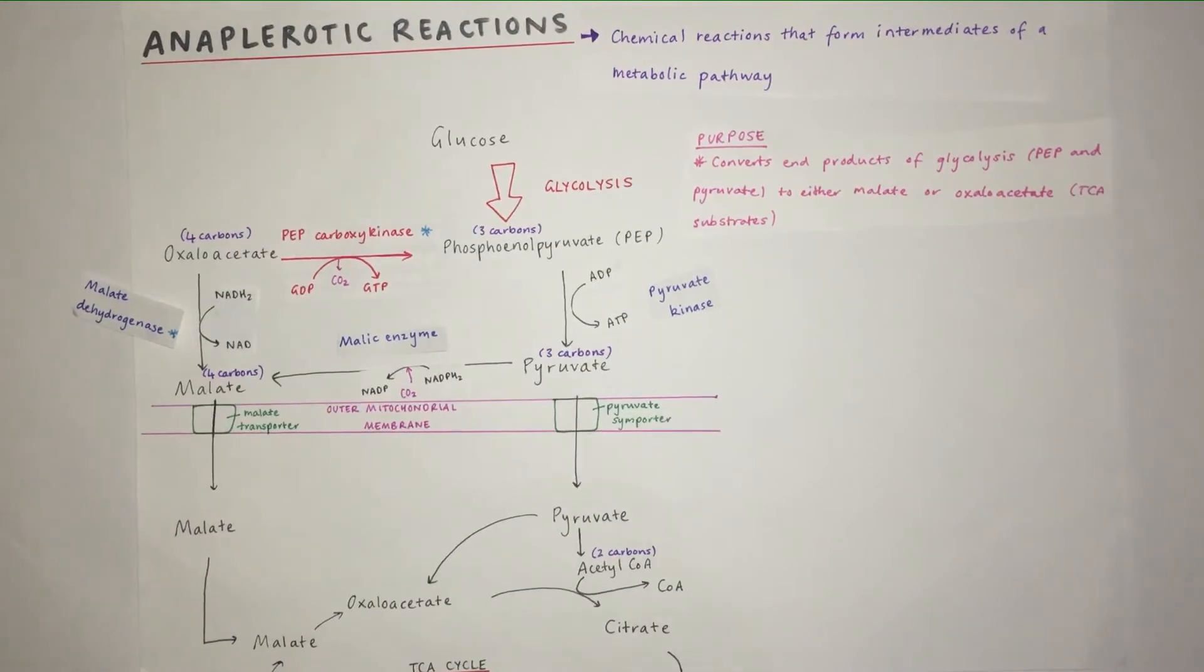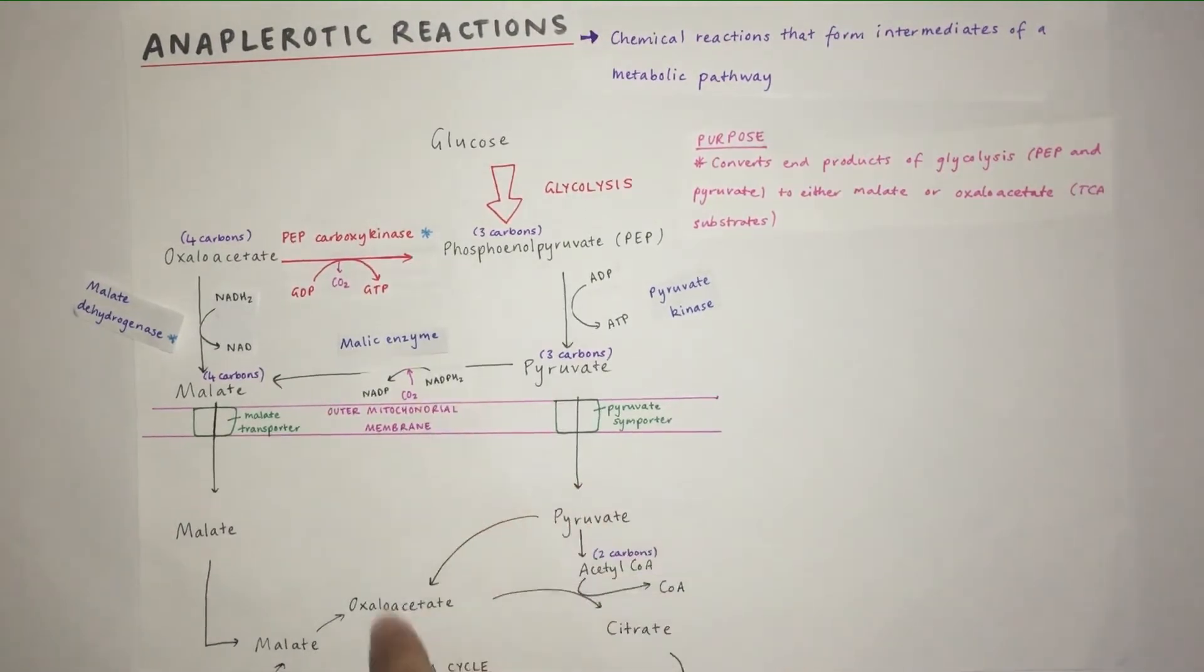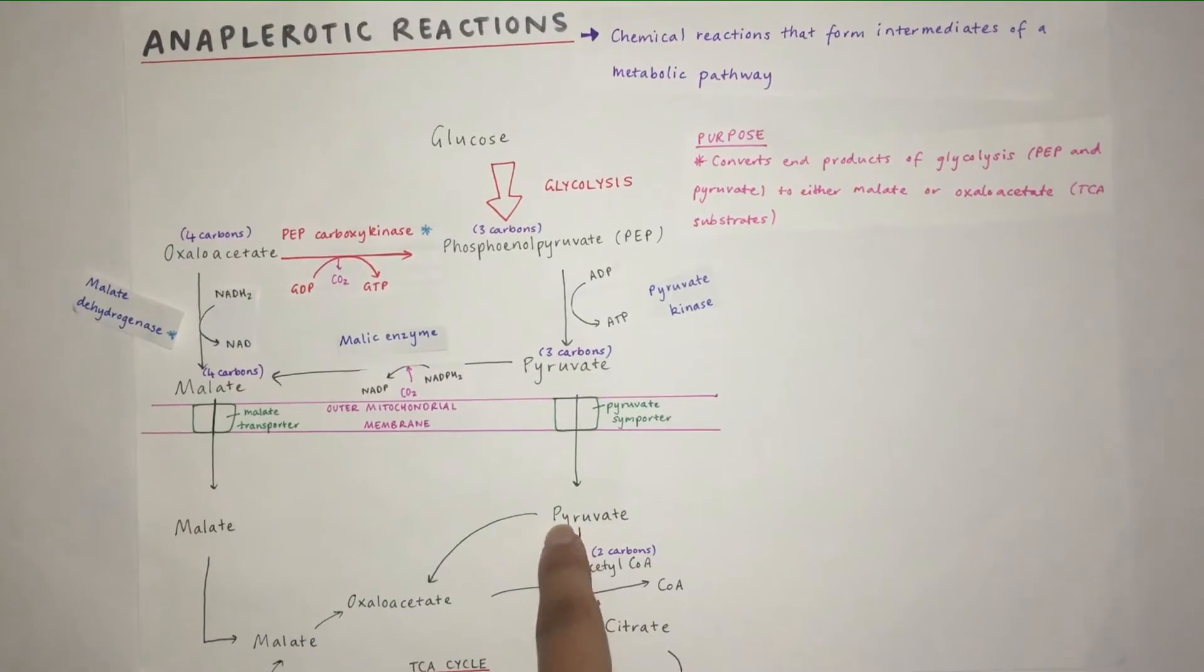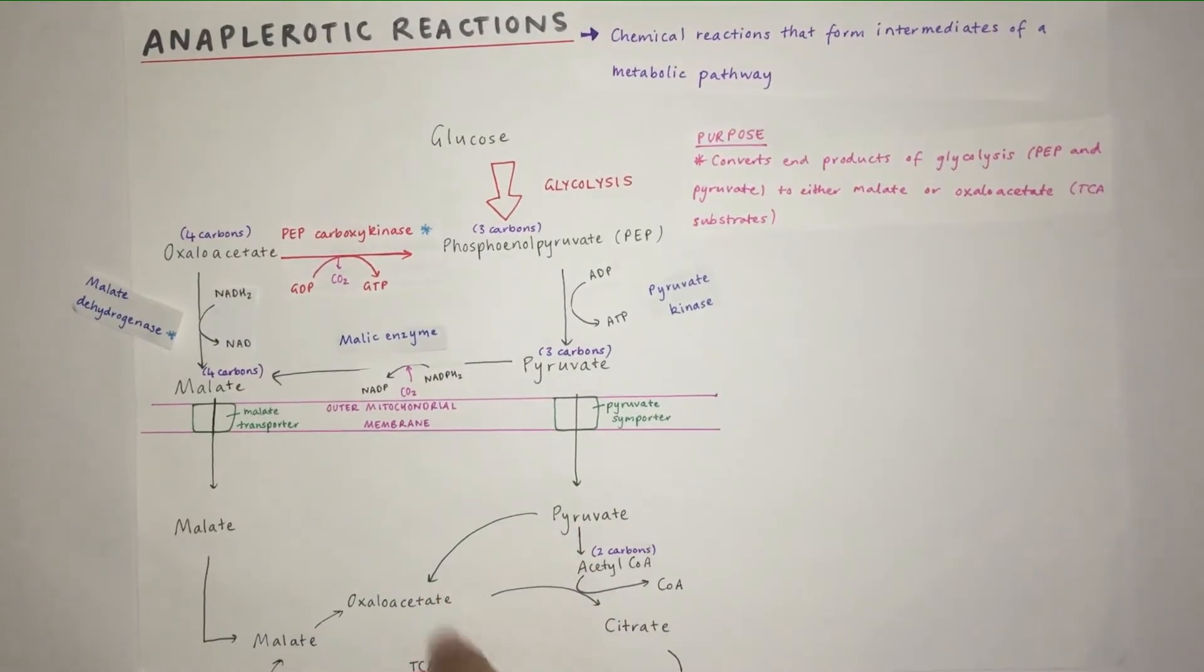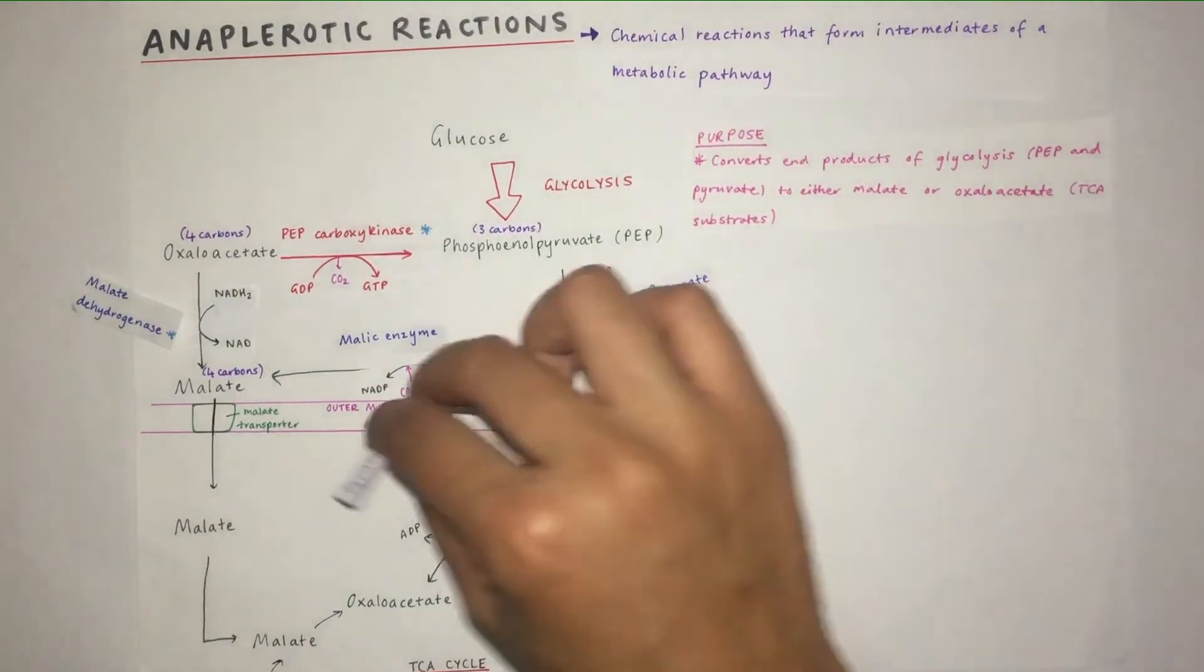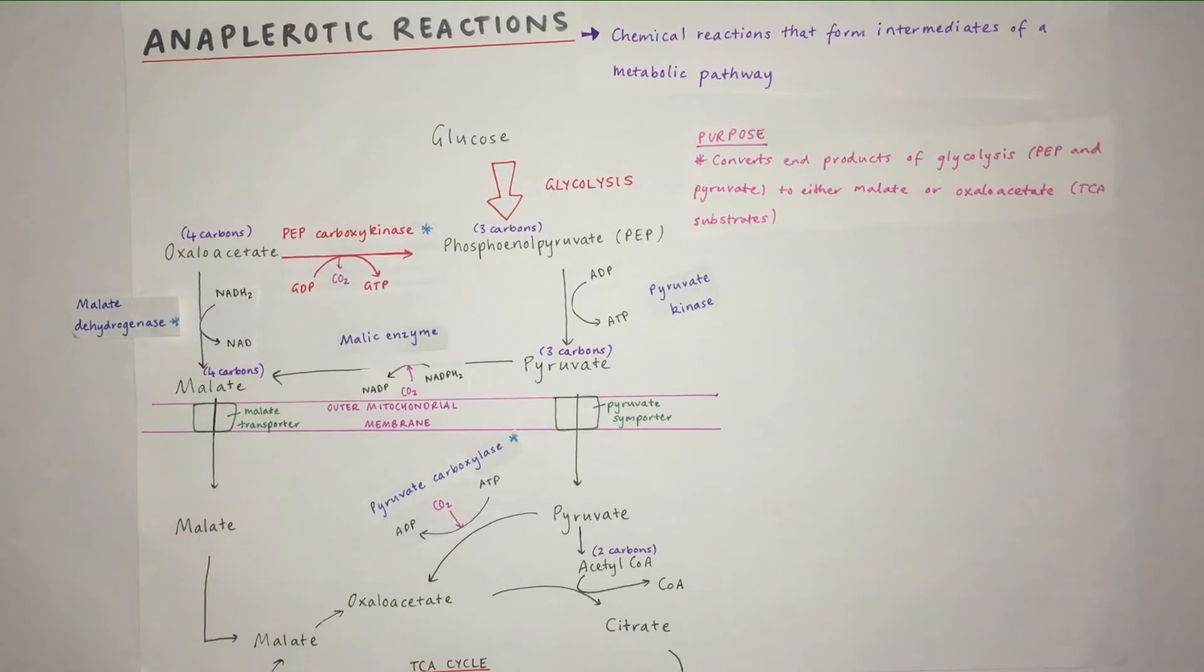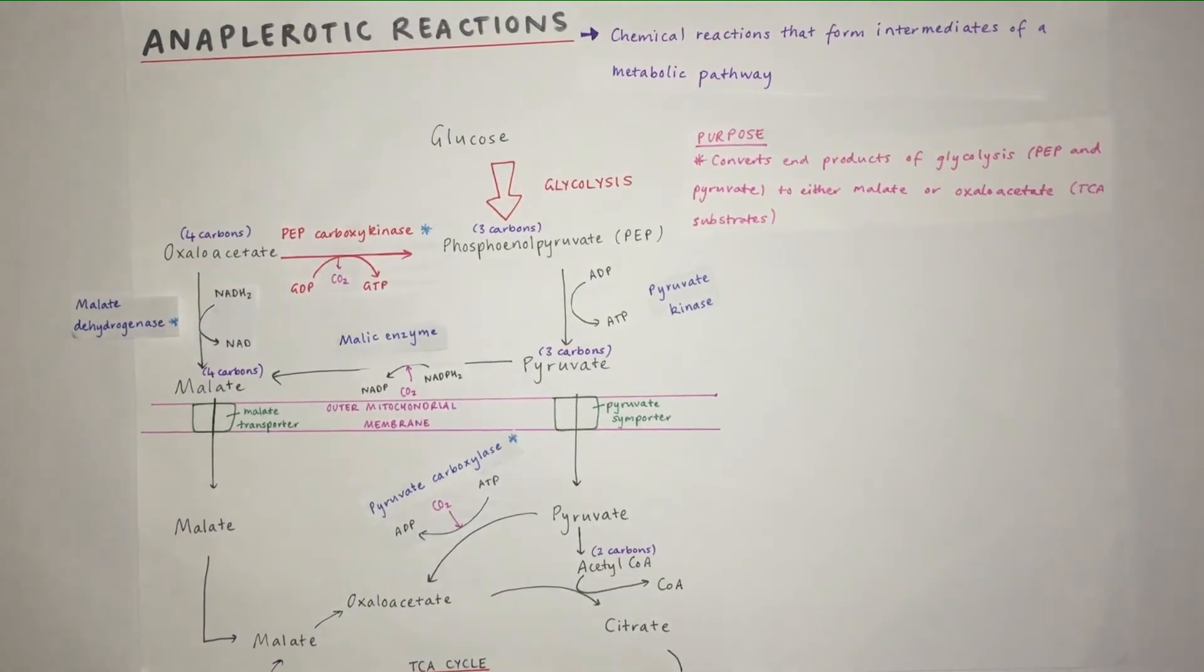However, oxaloacetate cannot pass through the outer mitochondrial membrane, so it enters the TCA cycle by conversion of pyruvate to oxaloacetate. This reaction is catalyzed by pyruvate carboxylase. An ATP becomes an ADP, and a CO2 is added because oxaloacetate has four carbons as opposed to three carbons in pyruvate.